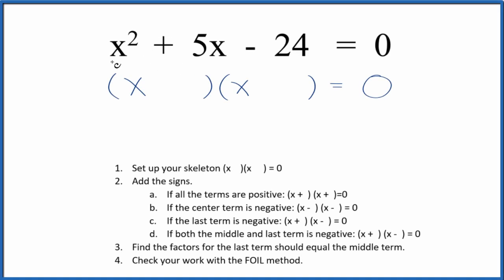Okay, let's factor the equation x squared plus 5x minus 24 equals zero. We're going to use these guidelines to help us. The first thing we do is set up a skeleton equation. I've done that right there.